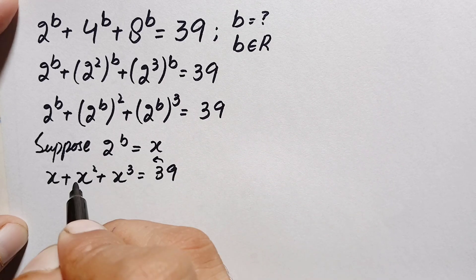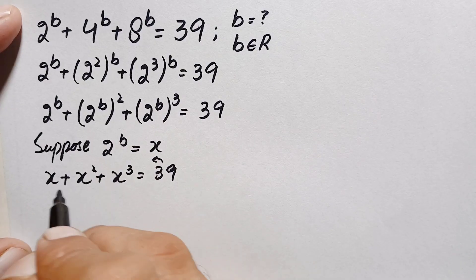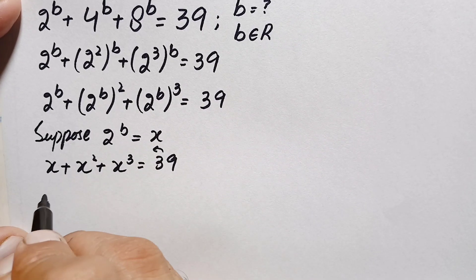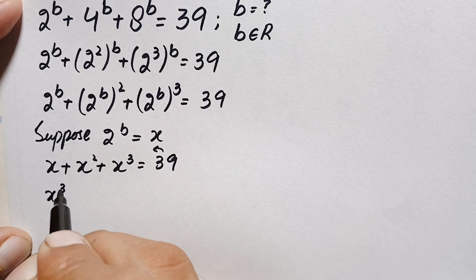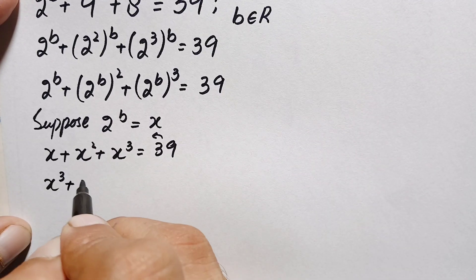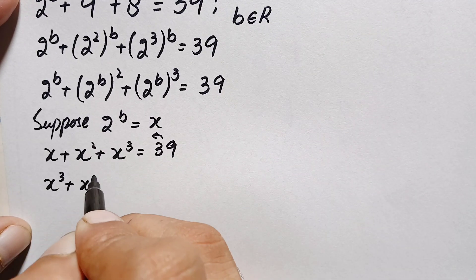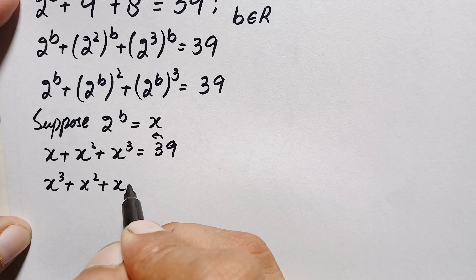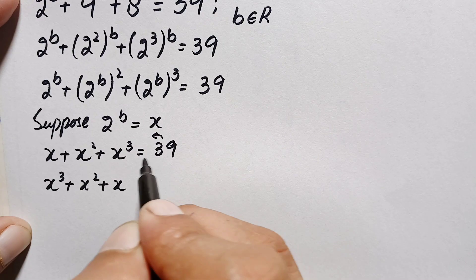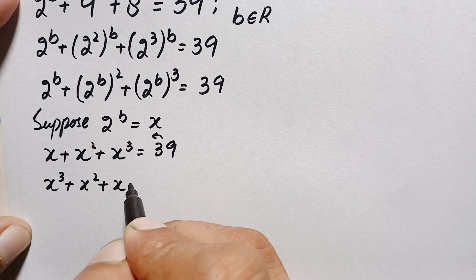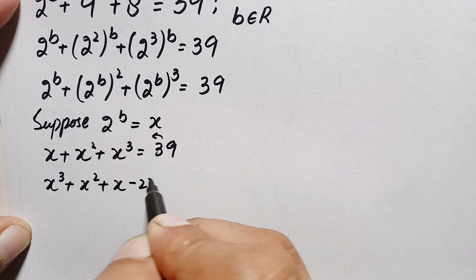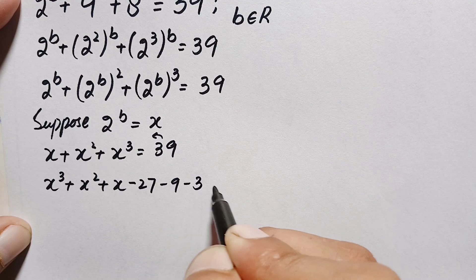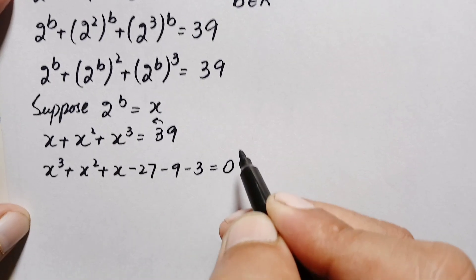We take 39 to the left hand side and arrange terms by their power. This gives x cubed plus x squared plus x minus 39 equals 0. Now, negative 39 can be written as negative 27 minus 9 minus 3, since combining those three numbers gives negative 39.